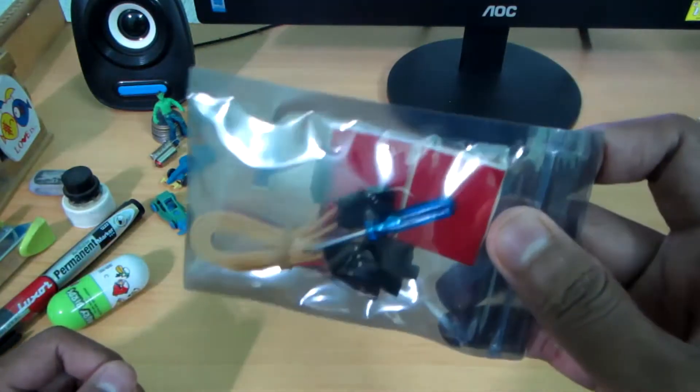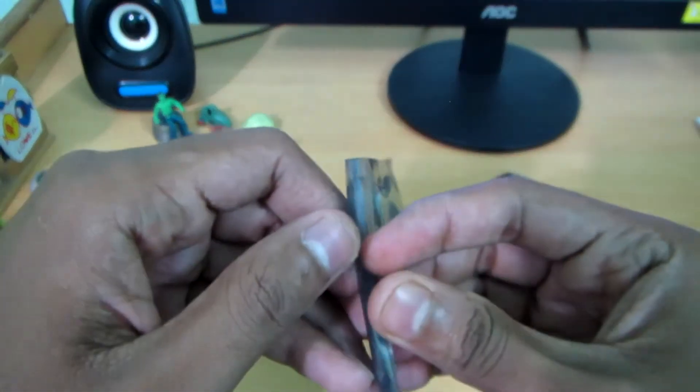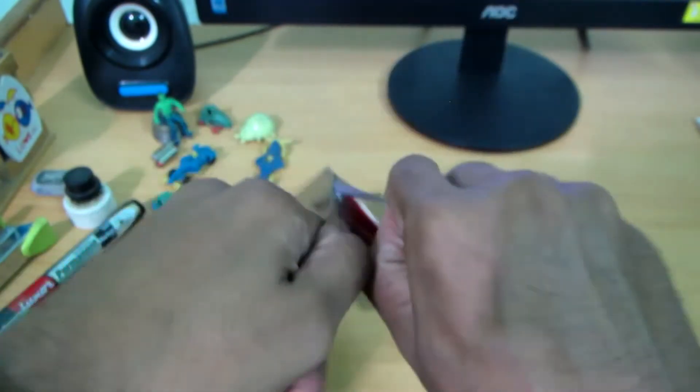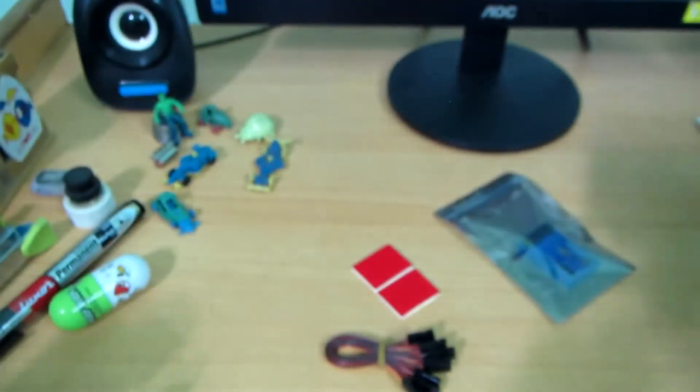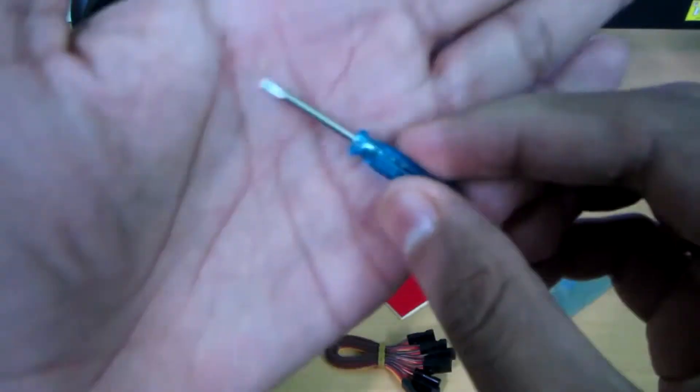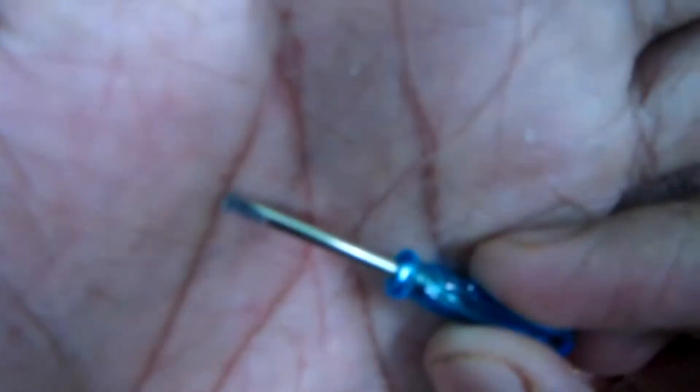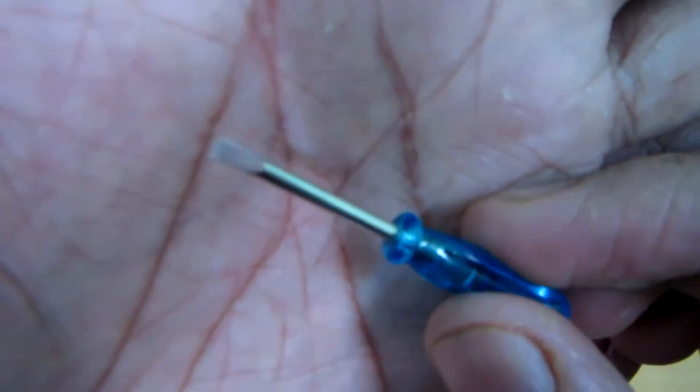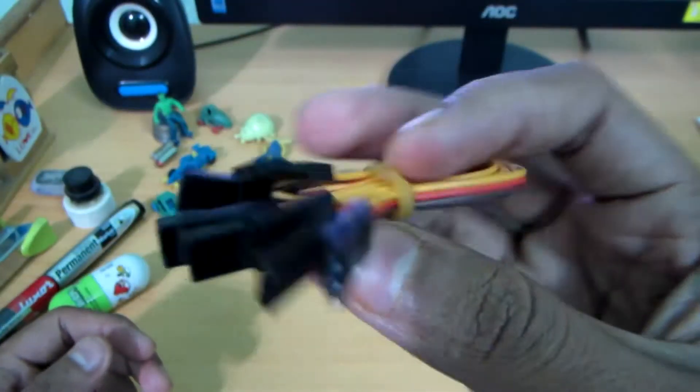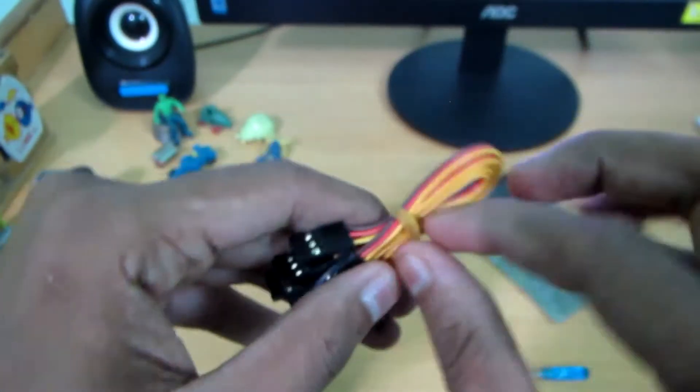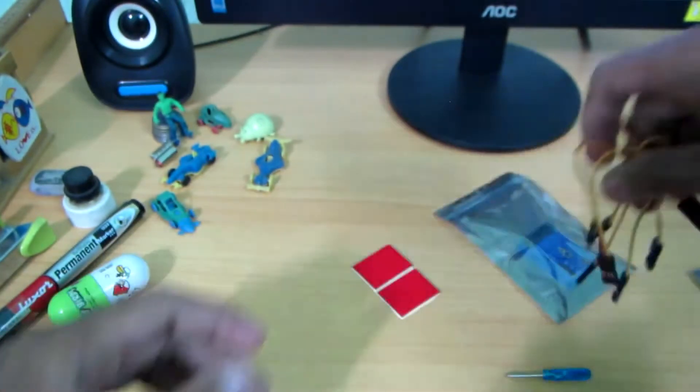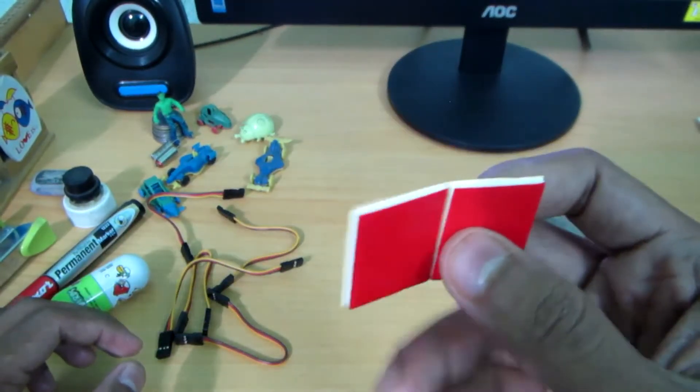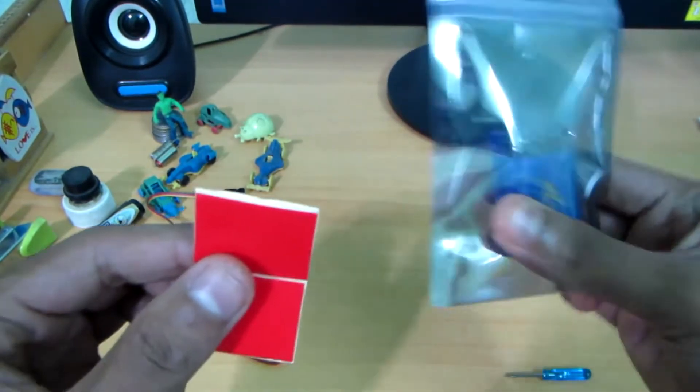Let's see what is in the accessories packet. This is a tiny screwdriver, very little screwdriver. These are some servo extension cables - one, two, three, four, five. Five servo extension cables. Two double-sided tapes for mounting the module.